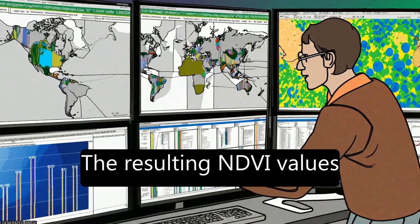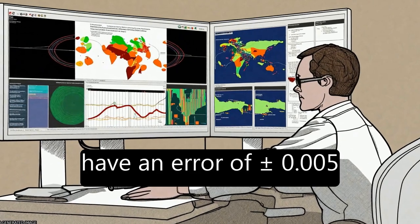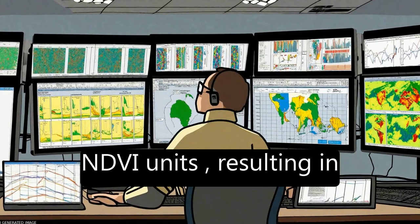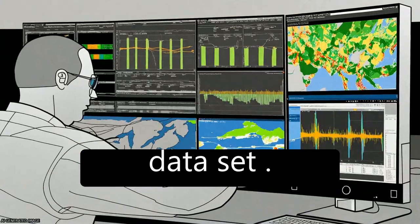The resulting NDVI values have an error of plus or minus 0.005 NDVI units, resulting in a non-stationary climate dataset.